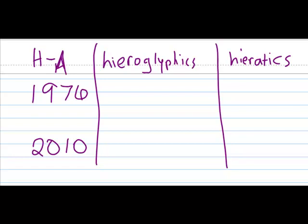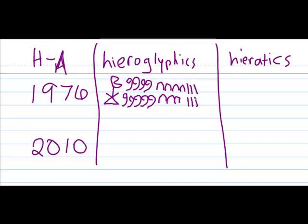So if we want to write the number 1,976, in hieroglyphics we'll need to use the lotus flower symbol for 1,000. And then 900, I need 9 coils of rope. 7 tens, so 7 heel bones. 6 ones, there we go.